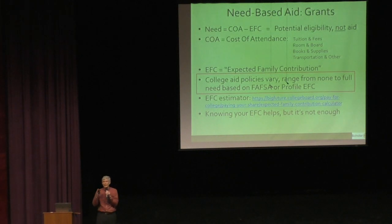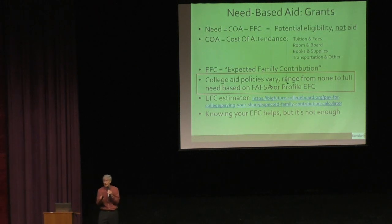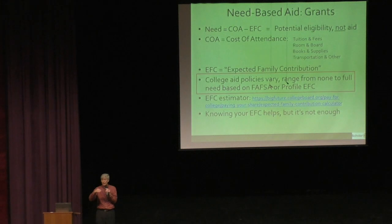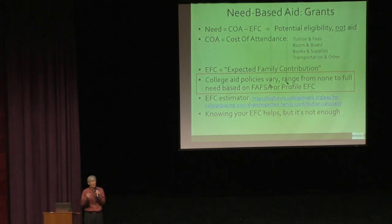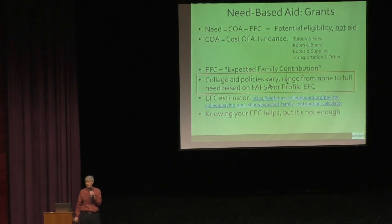For example, if your EFC is $30,000, that tells you you won't get a nickel of need-based aid at the University of Maine, because UMaine costs about $25,000 — less than your EFC, so there's no financial need. On the other hand, if you have an EFC of $30,000 and apply to Bowdoin, you do qualify for need — potentially as much as $35,000 to $40,000 of need.